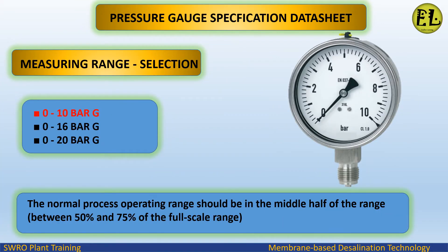Measuring range selection. Available ranges are 0 to 10 bar G, 0 to 16 bar G, and 0 to 20 bar G. The normal process operating range should be in the middle half of the range, between 50% and 75% of the full scale range. We select 0 to 10 bar G for this application.